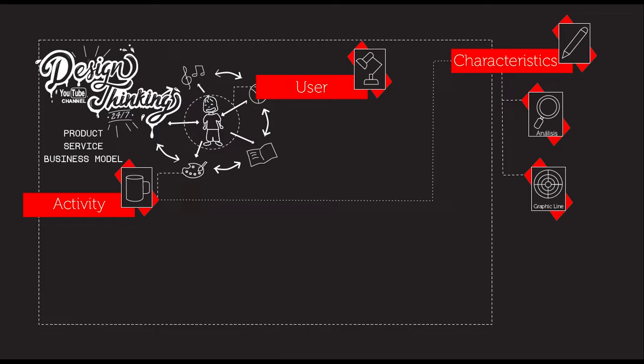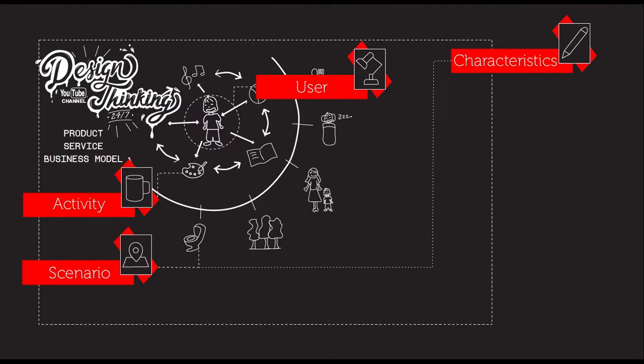After we analyze this first stage, we go to the scenario. The scenario is really important because those activities are placed in a scenario, and the scenario could have many different characteristics. It is always a place, but it also has a context.